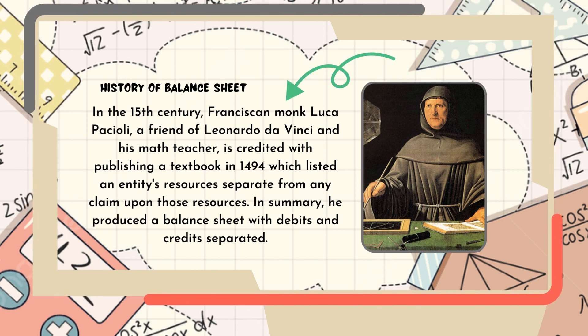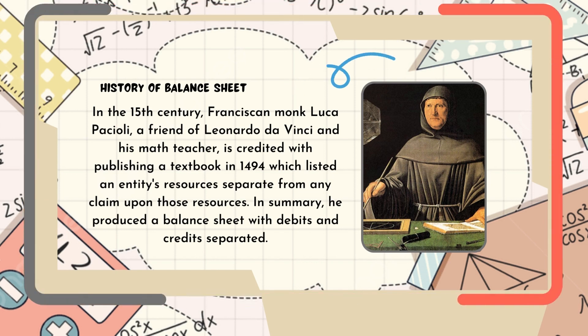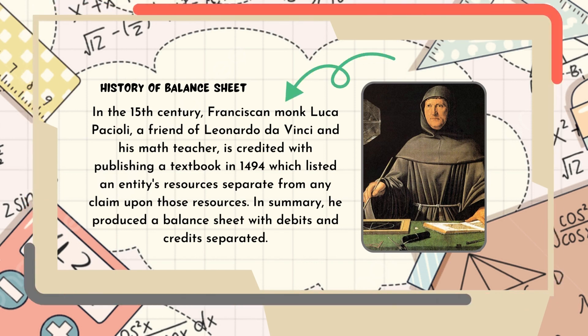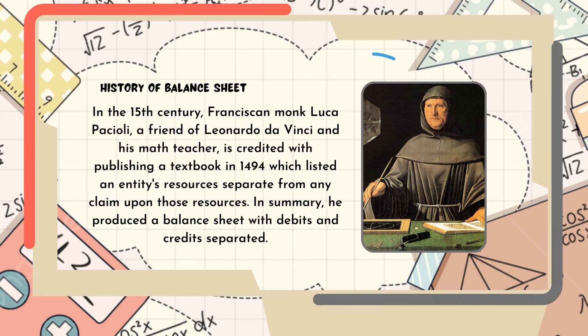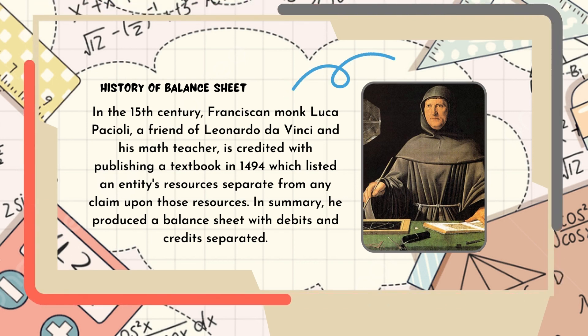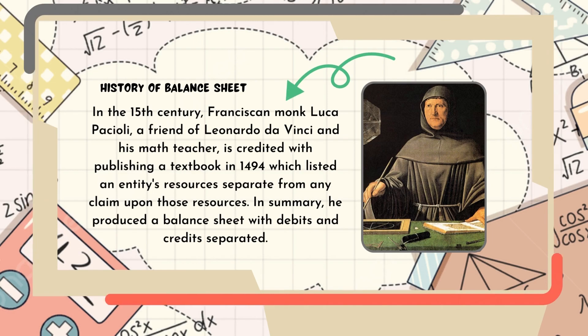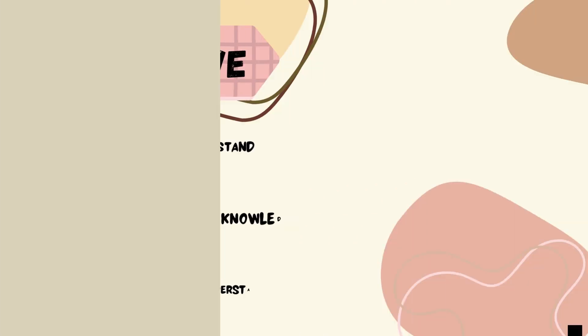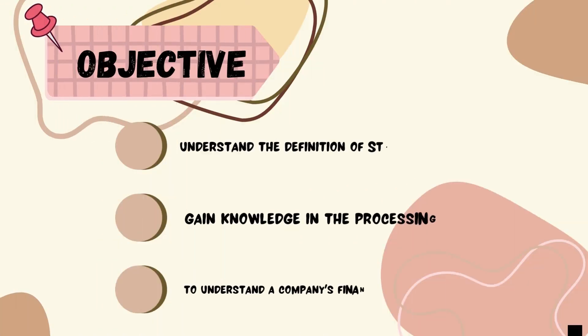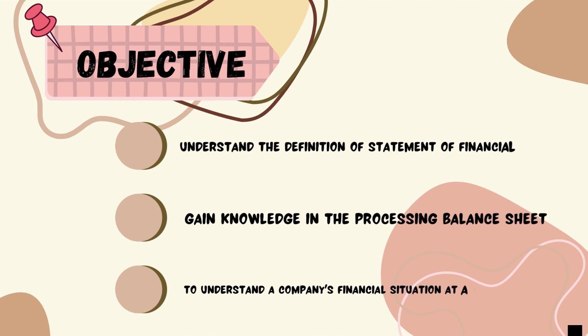From any claim upon those resources, in summary, he produced a balance sheet with debits and credits separated. Objective: Understand the definition of statement of financial position.